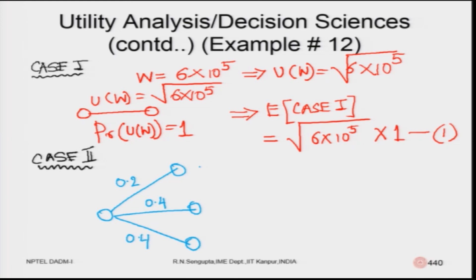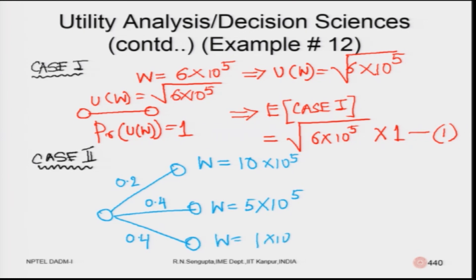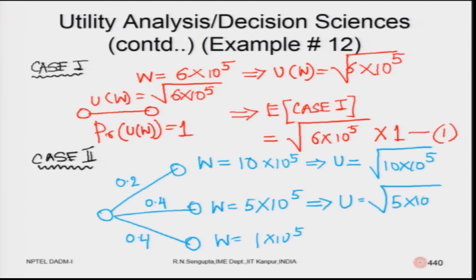The w values are 10 lakhs, 5 lakhs, and 1 lakh. The corresponding utilities are: u(w) = sqrt(10 × 10^5), u(w) = sqrt(5 × 10^5), and u(w) = sqrt(1 × 10^5).